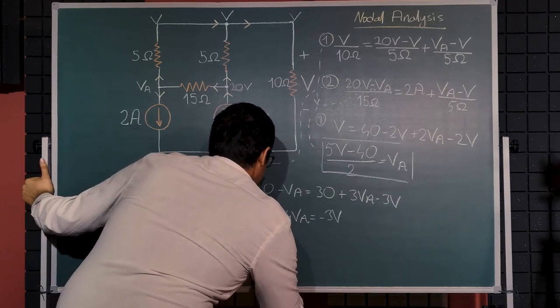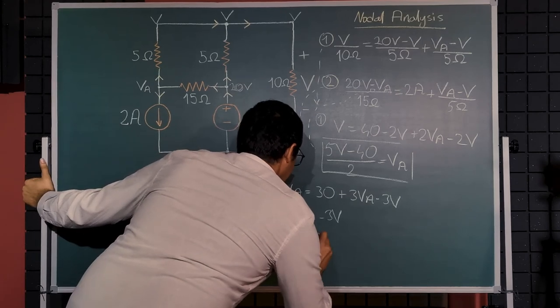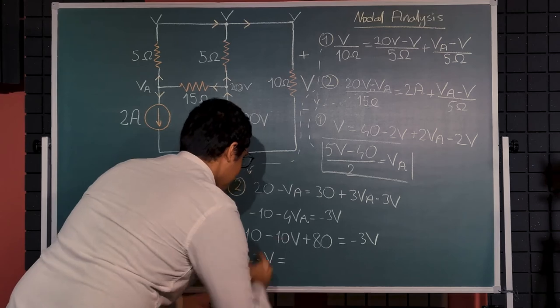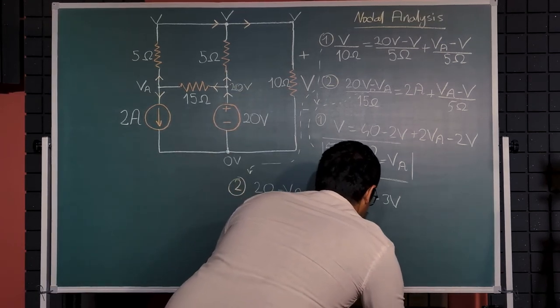So if I plug this instead of that, minus 10 minus 4 times the expression minus 10v plus 80 will be equal to minus 3v. Plus 7v must be equal to 70, and from that you calculate v as 10 volts.